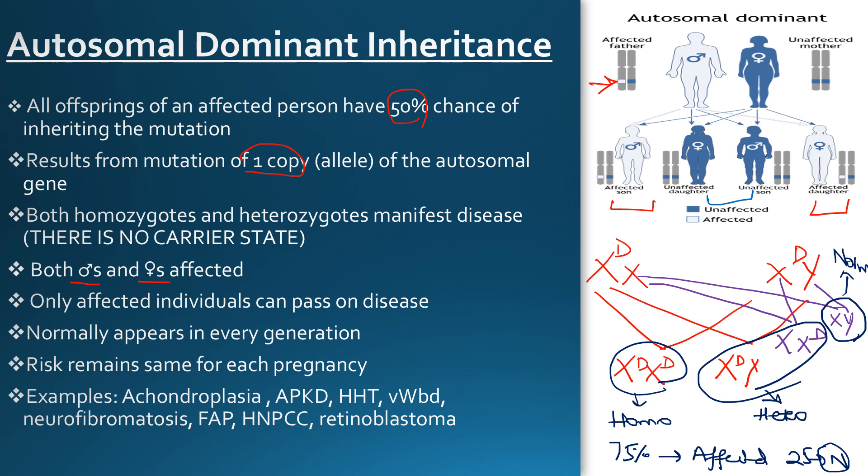Some examples of autosomal dominant disorders include achondroplasia, adult polycystic kidney disease, HHD, von Willebrand disease, neurofibromatosis, and so on.